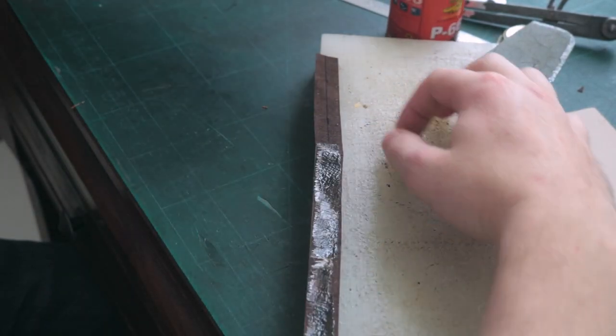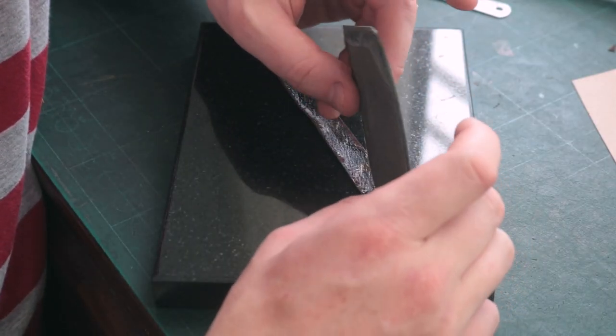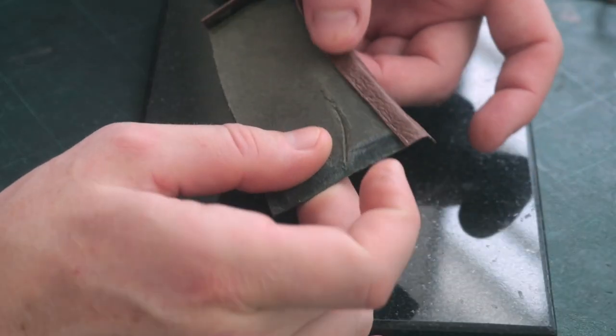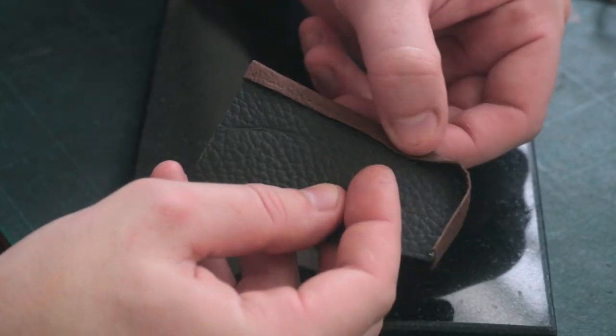I'm also applying adhesive on the binding and then placing the edge of the leather on the line I've just traced and fold both sides of the binding.